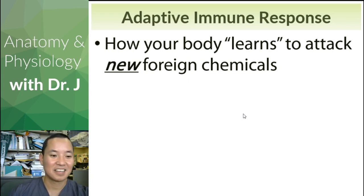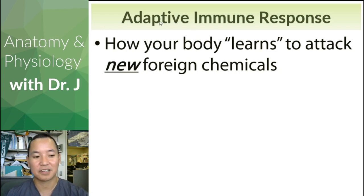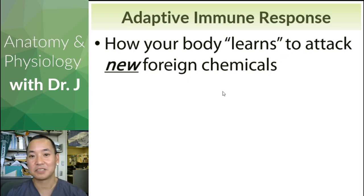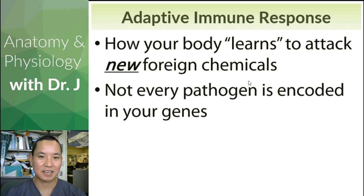For example, nobody has immunity to the SARS-CoV-2 virus. So everybody who's affected can't use their innate immune response — they can try to limit it, but eventually they need to fully recover using their adaptive immune response. This is why we don't have immunity: we've encountered something new that we've never encountered before as humans. Not every single pathogen is included in your genes.